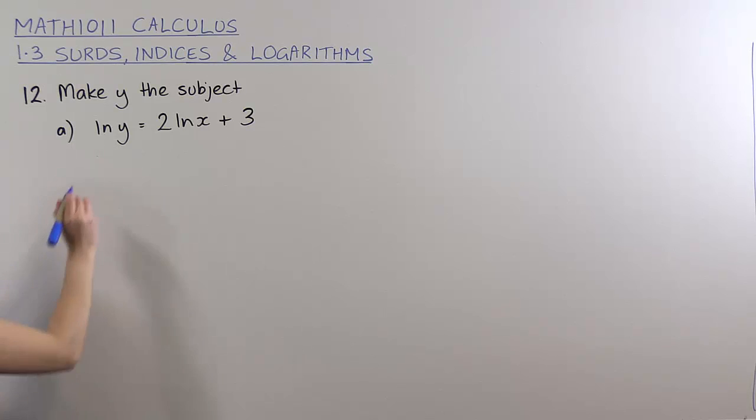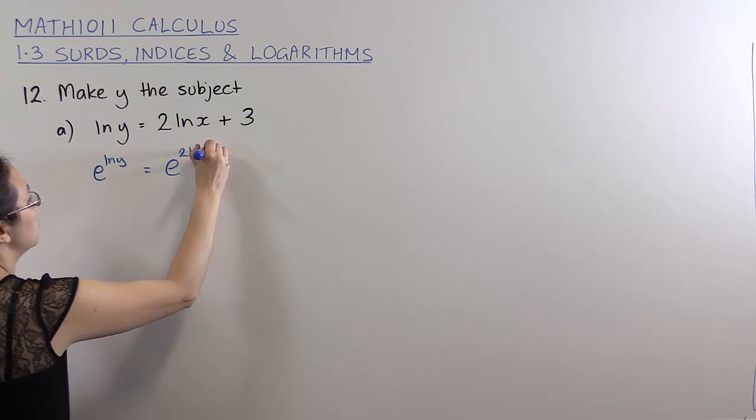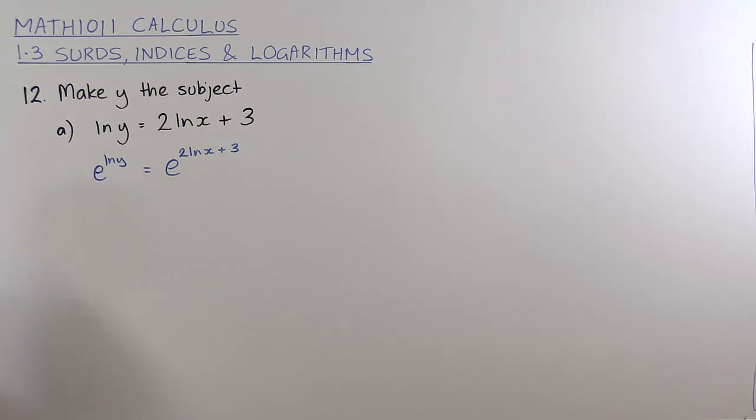One way to unravel that is to take the exponential of both sides. So take e to the power of log y, and on this side take e to the power of 2 ln x plus 3. We've just applied the same function to both sides.